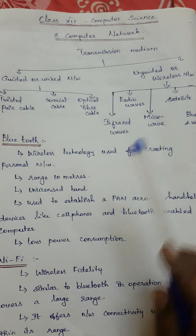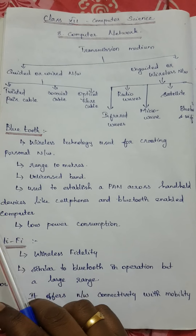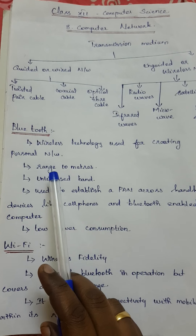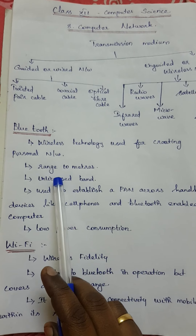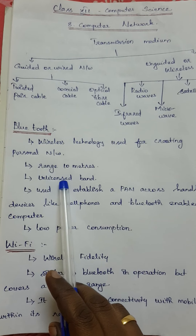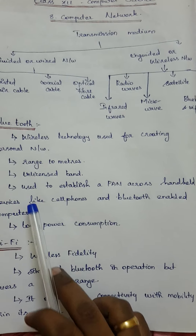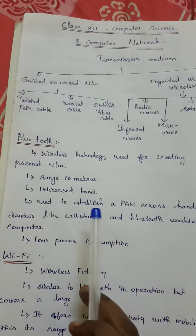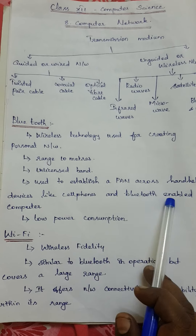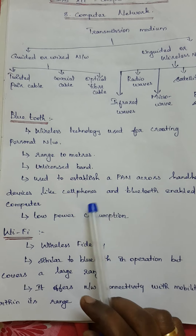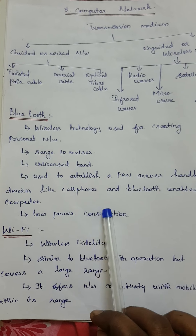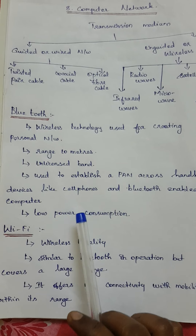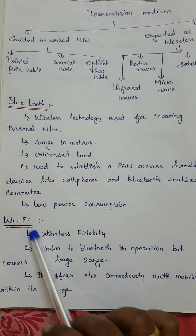Bluetooth is a wireless technology used for creating a personal area network. Its range is only 10 meters. To access Bluetooth we don't need any license, so it is called an unlicensed band. It is used to establish a PAN — Personal Area Network — across handheld devices like cell phones and Bluetooth-enabled computers. The main advantage of Bluetooth is its low power consumption.